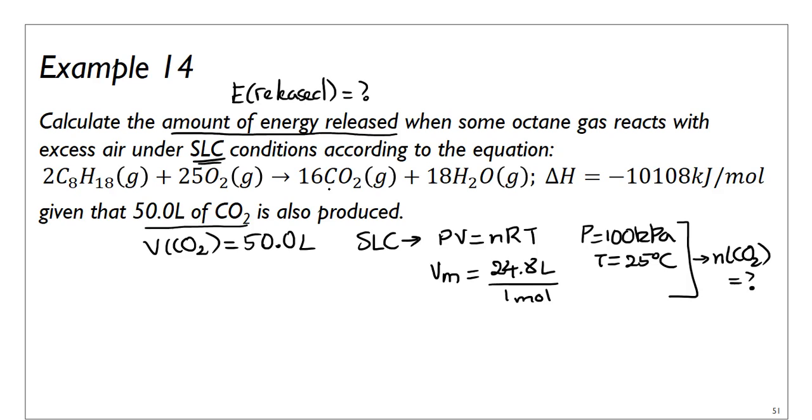It's because of the thermochemical equation that's given to you. And I think it's very important to understand what kind of information the thermochemical equation is trying to give you. And one way to look at it is it actually creates a ratio between the amount of energy released, and it is released because delta H is negative, and the amount of reactant or product used.